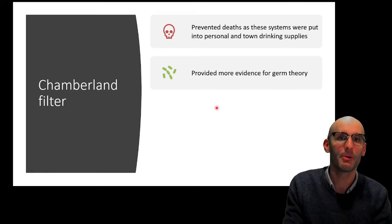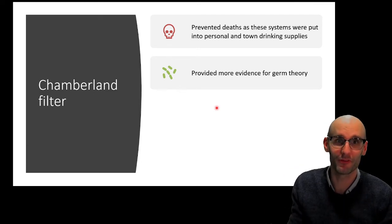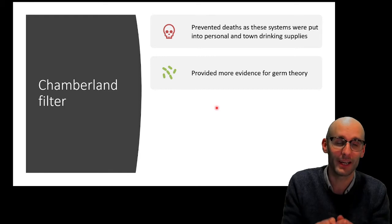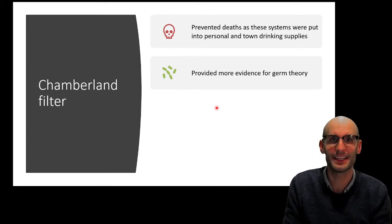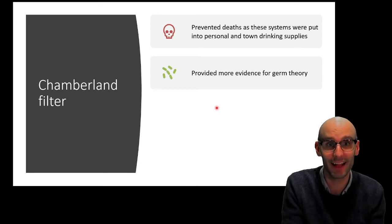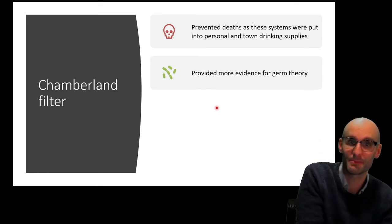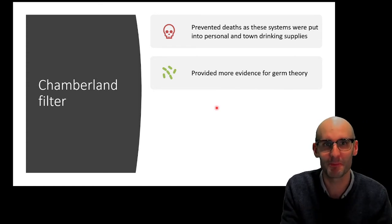...because essentially they showed that when you filter, when you take a puss sample, for example, of someone with a bacterial disease and you filter it and give that to an animal, the animal doesn't contract the disease. So you can filter out the cells and by filtering out the cells you prevent the disease transmission. So it provides more evidence for germ theory which was the big battle at the time.